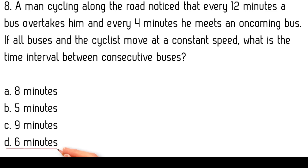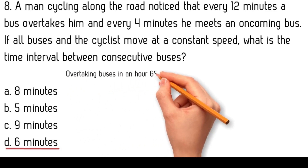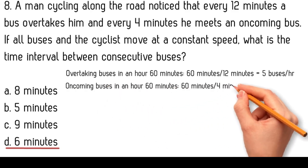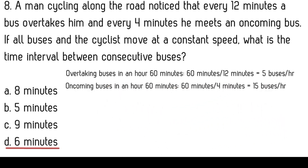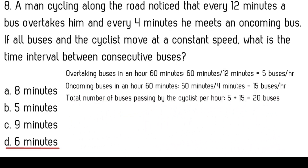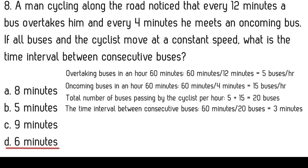To find the time interval between consecutive buses, consider: overtaking buses — every 12 minutes a bus overtakes the cyclist, therefore 60 minutes divided by 12 minutes equals 5 buses per hour. Oncoming buses — every 4 minutes a bus meets the cyclist, therefore 60 minutes divided by 4 minutes equals 15 buses per hour. Combining both directions, the total number of buses passing by the cyclist per hour is 5 plus 15 equals 20 buses. The time interval between consecutive buses is 60 minutes divided by 20 buses equals 3 minutes.